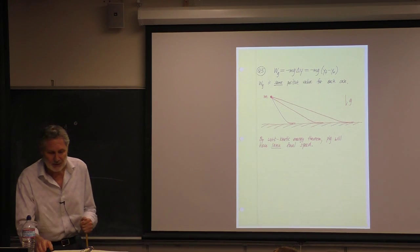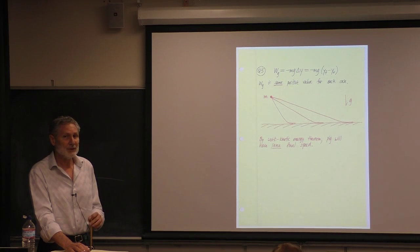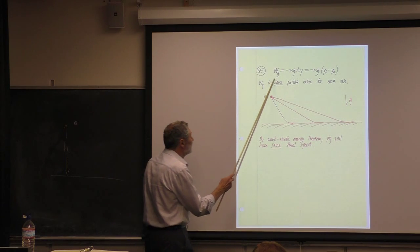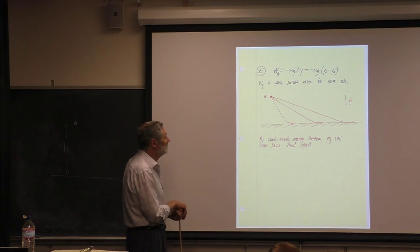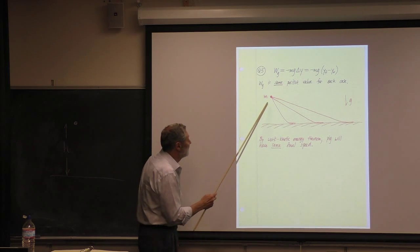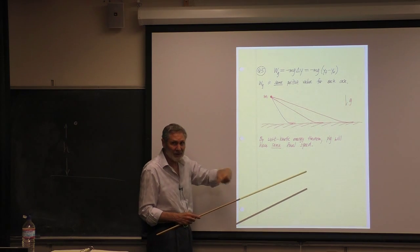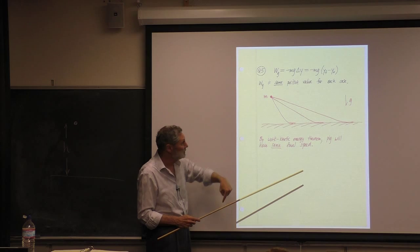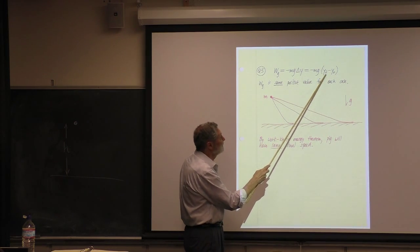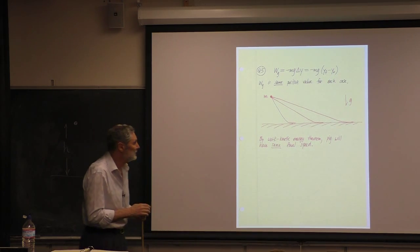Because all three ramps have the same change in y-value, the work done by gravity must be the same for each. It's path independent. That path independence is fundamental — it leads to potential energy, as we'll see in the next chapter. The work done by gravity must be positive because the displacement is downward and the force is downward.